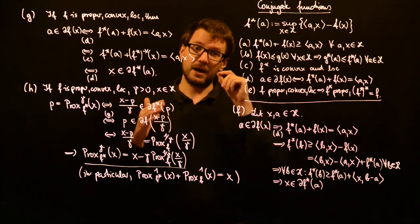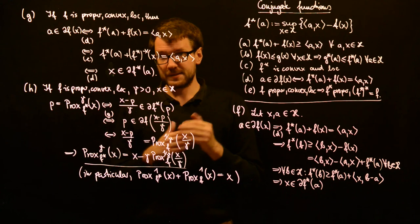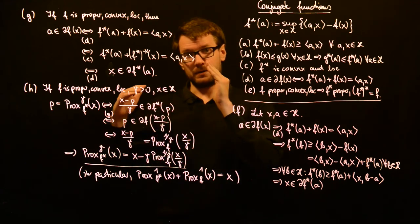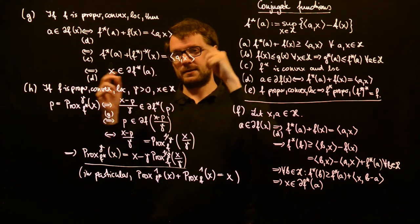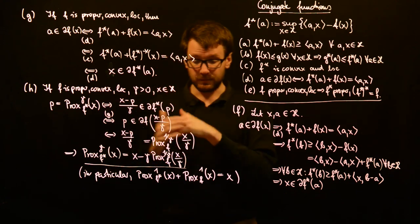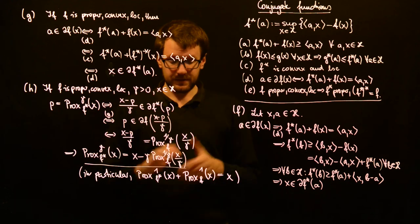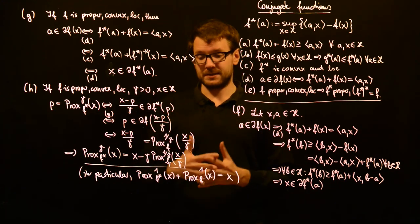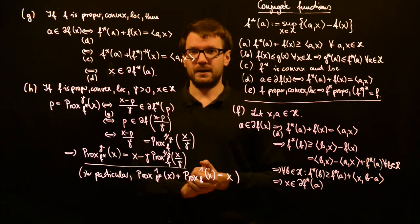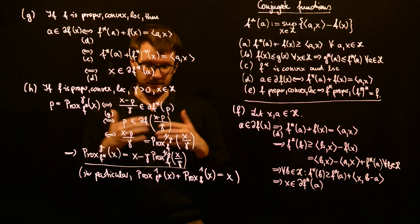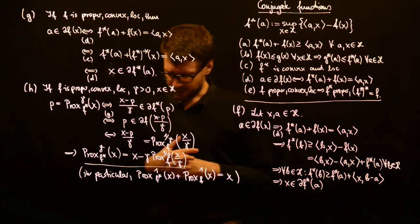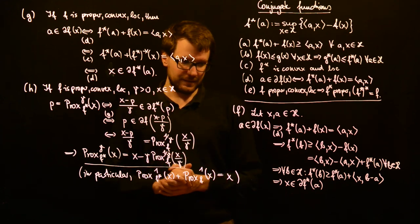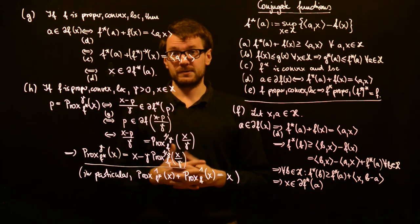Whenever you have a subspace in an inner product space and its orthogonal complement, you can always uniquely decompose any point into a component on the subspace and a component on the orthogonal complement. This is a generalization of that property: the proximal point with respect to an indicator function is a projection, and taking the indicator functions of those subspaces gives exactly the well-known relation for orthogonal decomposition. With this we conclude our properties, and in the next video we will see some examples to make this theoretical discussion about conjugate functions more concrete.